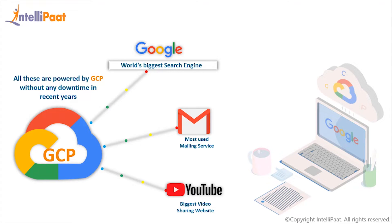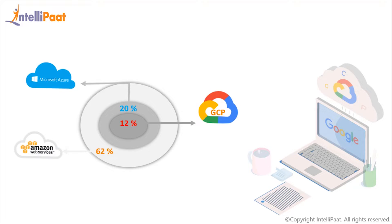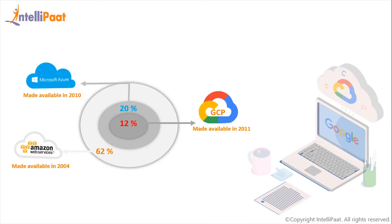GCP is not the only cloud computing platform available in the market — there are many. Today we are going to discuss the three big players: Amazon Web Services, Microsoft Azure, and of course Google Cloud Platform. Their market share is quite visible on the screen. While considering AWS's big share, one also has to take cognizance of its time of inception — AWS was made available for customers back in 2004, Azure came into existence in 2010, and GCP is the newest one, launched in 2011.